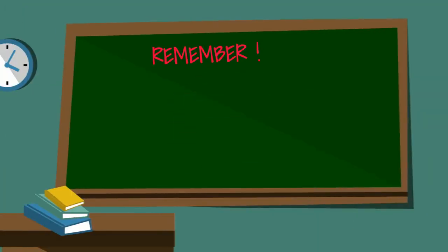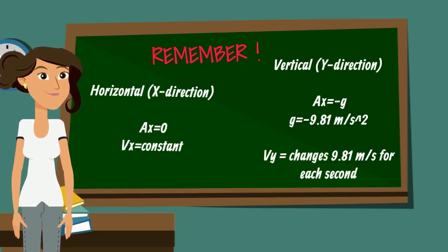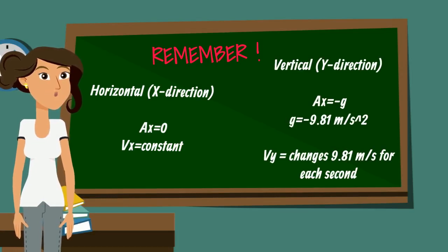Remember, in horizontal x-direction, ax equals to 0, hence velocity is constant. However, on the vertical y-direction, a equals to negative g where g is negative 9.81 m per second squared and velocity changes by 9.81 m per second for each second.